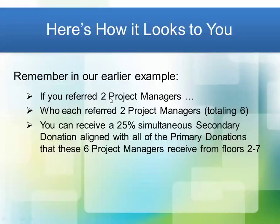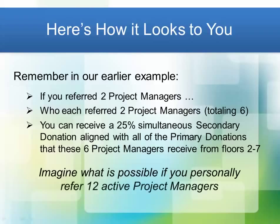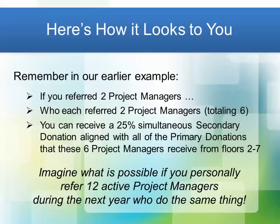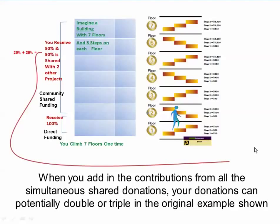Imagine what's possible if you personally refer twelve active project managers instead of just two during the next year who do the same thing — it's extremely powerful. When you add in the contributions from all the simultaneously shared donations, your donations can potentially double or triple the original example. When we did the first chart going up the stairway, we were only talking about the primary donation — that first 50%. Now we're talking about the second 50%, which are two 25% donations. When you add that into the formula, it can literally double or triple the donations that you receive for your project.